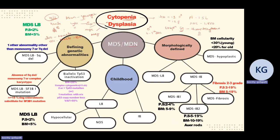One important thing to remember: if the patient is receiving growth factor therapy, has drug history, infection, metabolic deficiencies, or immune disorders, you should not diagnose MDS. No patient should be diagnosed with MDS if the drug history is unknown. You must first rule out nutritional deficiencies — for example, vitamin B12 deficiency can also produce megaloblastoid changes. Only after excluding these causes can you call it MDS.